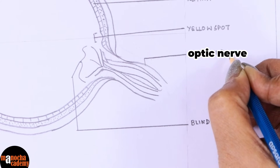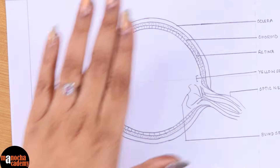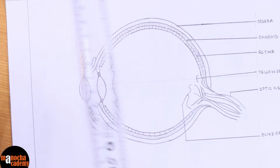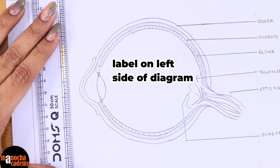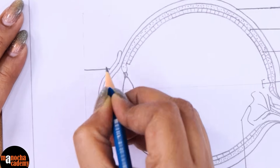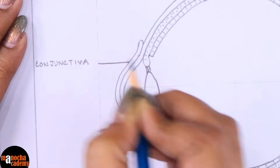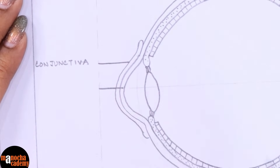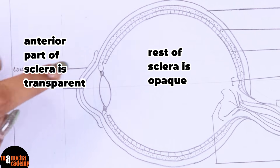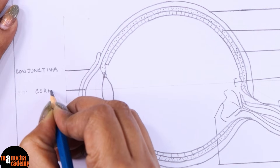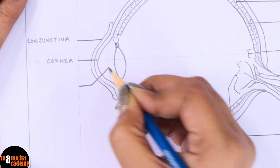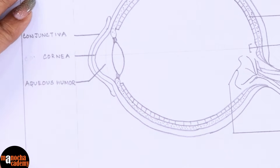We have a lot of things still to label on this side, but I will not label them on the right because I'd have to cut through the diagram, which would look very odd. So for the eye diagram I will label some on the left-hand side as well. The first thing we label is the conjunctiva — the one that is infected when we have conjunctivitis. The next layer is the anterior part of the sclera, which is transparent — the rest of the sclera is opaque. Only the anterior one-sixth portion is transparent so that light can enter; it is known as the cornea. This space is filled with a fluid known as the aqueous humor.